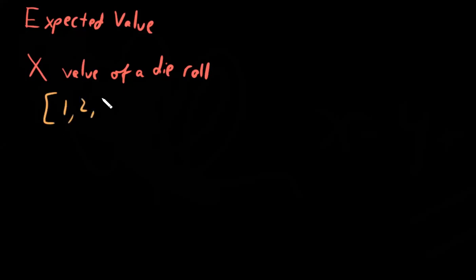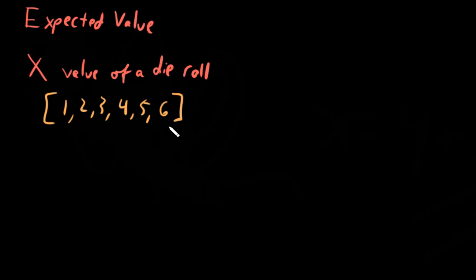We talked about the values this can take on — it's the set 1, 2, 3, 4, 5, and 6. The expected value is what you expect the long-term results of continuously sampling from this random variable are over long periods of time. It's mathematically equivalent, in many cases, to the mean.